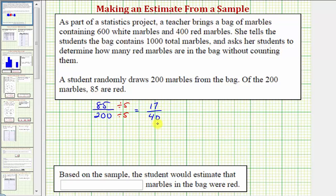So if this is the fraction of red marbles from the sample, the student would also estimate that this fraction of marbles would be red from the total of 1,000 marbles. Let's write this fraction as a percentage. To convert a fraction to a percentage, we first convert to a decimal by dividing, then convert the decimal to a percentage.